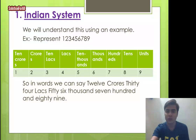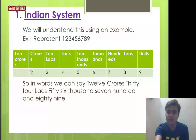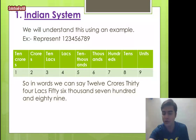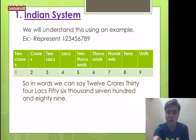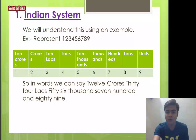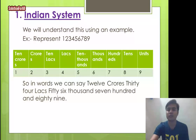To represent the number 123456789 in the Indian system, we place digits from the right: nine in the units place, eight in tens, seven in hundreds, six in thousands, five in ten thousands, four in lakhs, three in ten lakhs, two in crores, and one in ten crores. In words, this is 12 crores, 34 lakhs, 50 thousand, 7 hundred and 89.